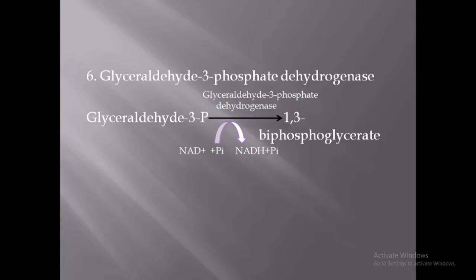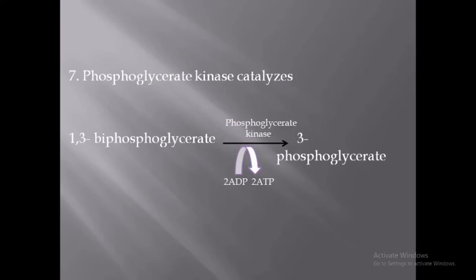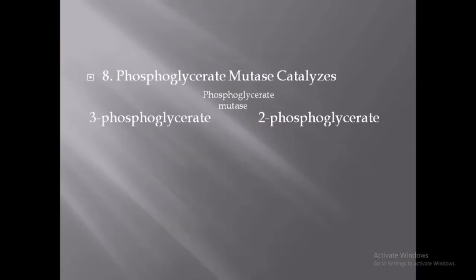The seventh step is the conversion of 1,3-bisphosphoglycerate to 3-phosphoglycerate with the help of the enzyme phosphoglycerate kinase. Here, 2 ADP molecules are converted to 2 ATP molecules. This step is a good example of substrate-level phosphorylation, since ATP is synthesized without the electron transport chain. It is reversible and a rare example of a kinase reaction being reversible.